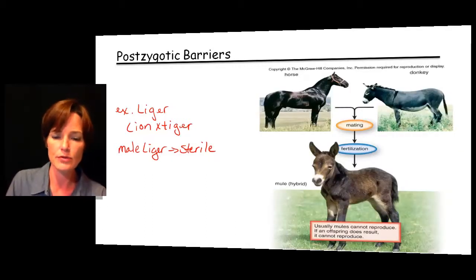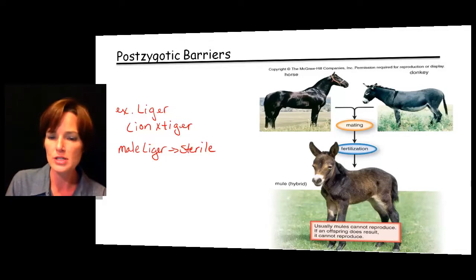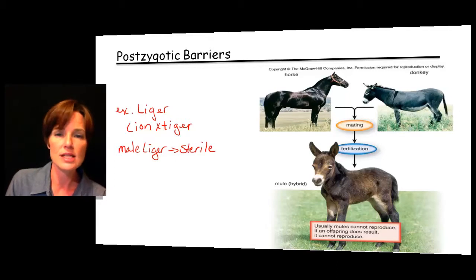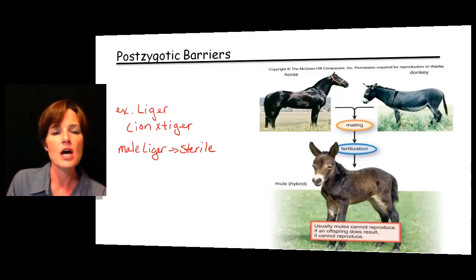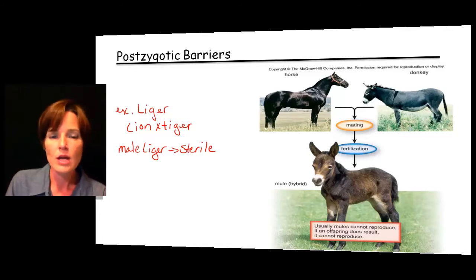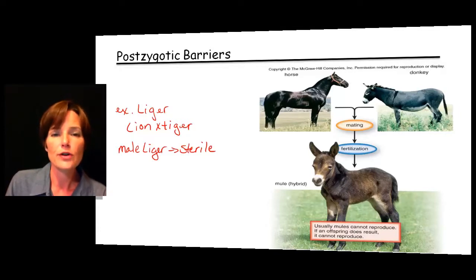Another common example is a mating between a horse and a donkey. Very similar organisms — they can come together, we can mate them, that zygote does form, and it does develop into an offspring which we call a mule. That mule, though, is not going to be able to produce offspring of its own, so you can't take a mule and mate it with another mule and expect to get little mules. These are examples of the breakdown that takes place after fertilization and zygote formation. The breakdown may occur in the actual development of the zygote, or if the zygote does develop — as with the liger and the mule — we don't get fertile offspring from the pairing.